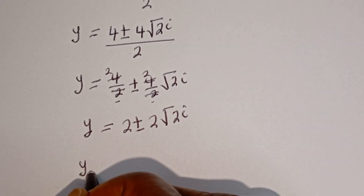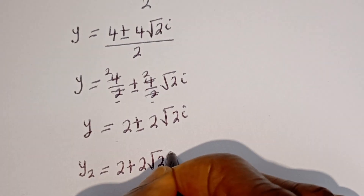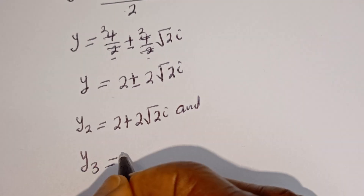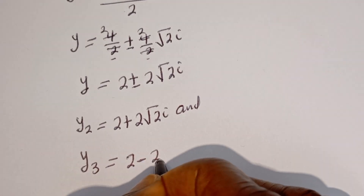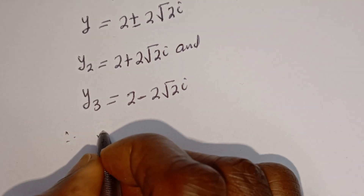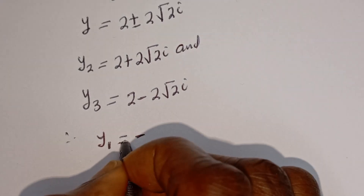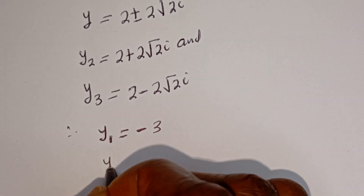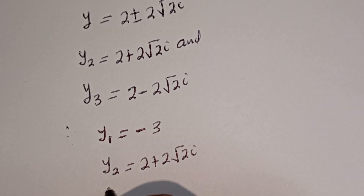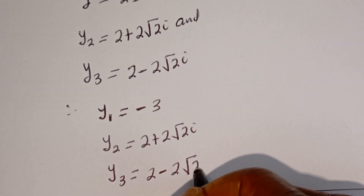Therefore y equals 2 plus or minus 2 root 2 i. So y2 equals 2 plus 2 root 2 i, and y3 equals 2 minus 2 root 2 i. The final values of y are: y1 equals minus 3, y2 equals 2 plus 2 root 2 i, and y3 equals 2 minus 2 root 2 i.